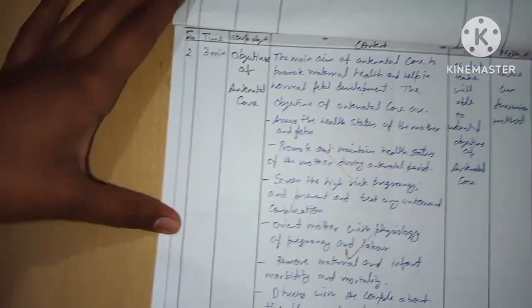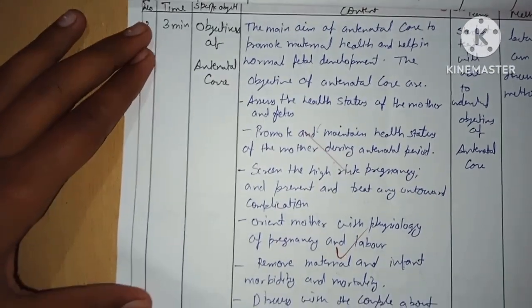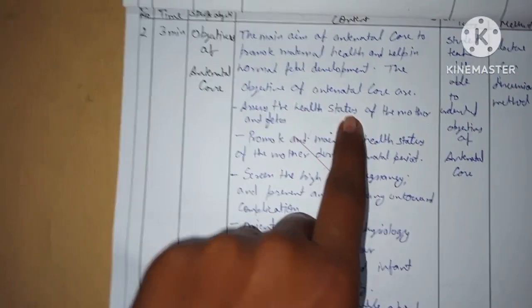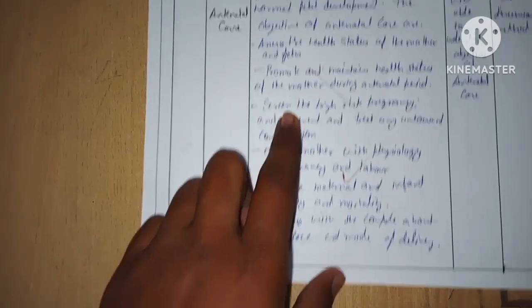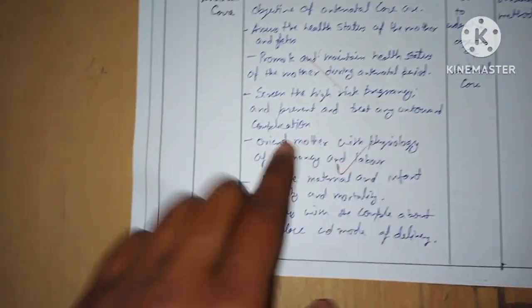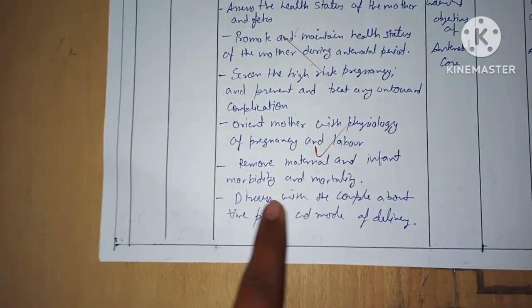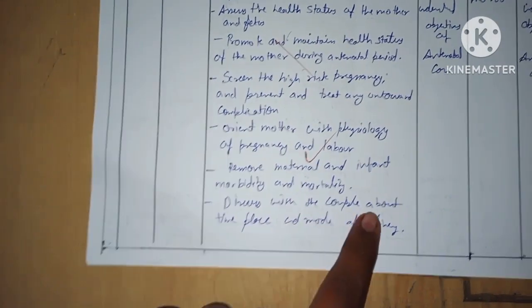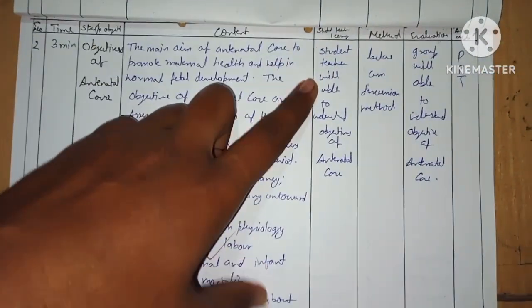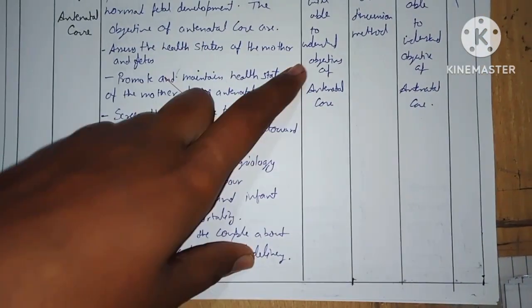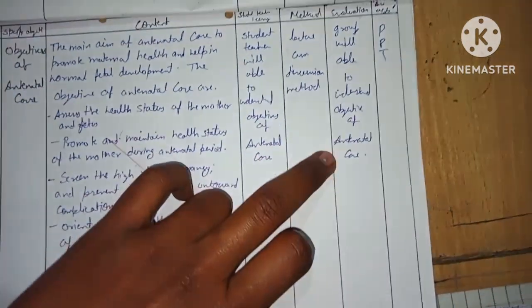Second point — time: three minutes. Specific objective: objectives of antenatal care. Content: the minimum aim of antenatal care is to promote maternal health and help in normal fetal development. The objectives are: assess the health status of the mother and fetus, promote and maintain health during the antenatal period, screen for high-risk pregnancy, prevent and treat any unwanted complications, orient the mother with the physiology of pregnancy and labor, reduce maternal and infant morbidity and mortality, and discuss with the couple about the time, place, and mode of delivery. Method: lecture cum discussion. Evaluation: group will be able to understand the objectives of antenatal care.